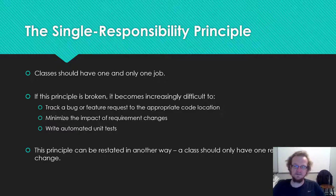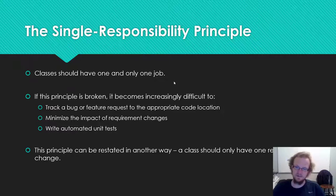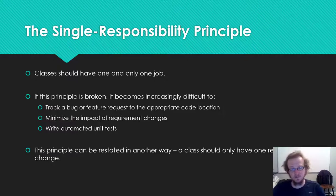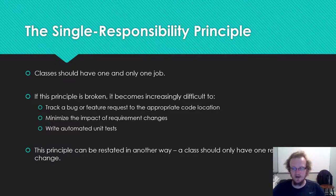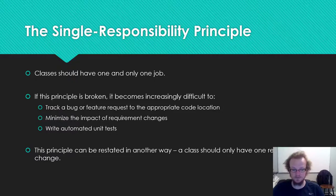This is a fairly easy concept for a software engineer, but you can rephrase it for a business or project management perspective: you should only ever have a single reason to change a class. There should only be a small subset of requirements that could trigger a change to that class. If you notice that seemingly random requirement changes keep forcing you back to change the same central class, that usually indicates you've broken the principle — you should break that central class into multiple, more focused classes.